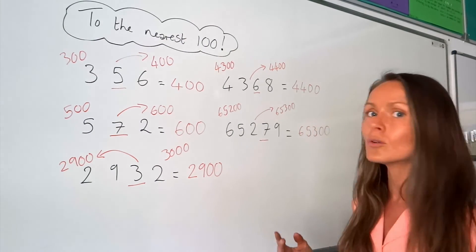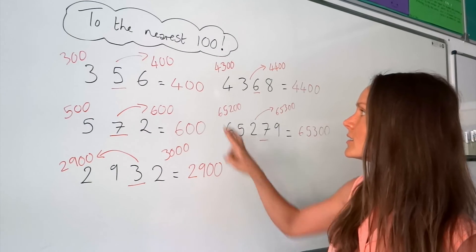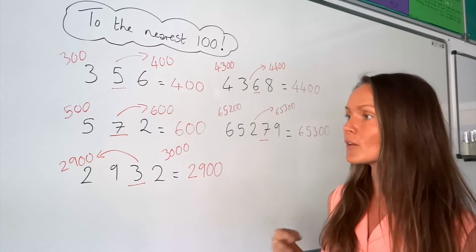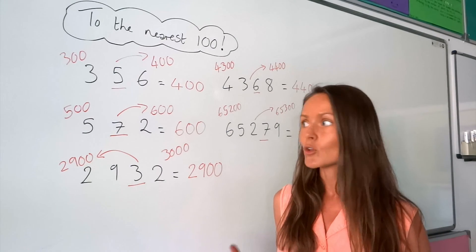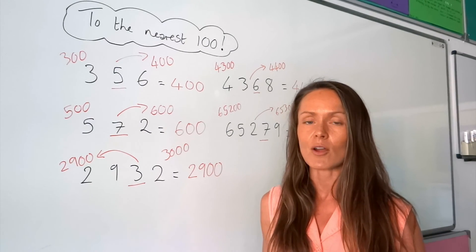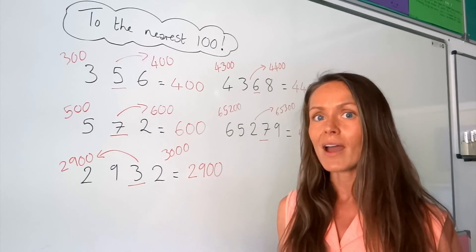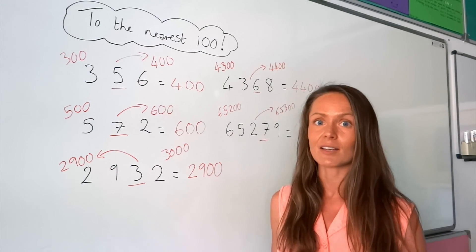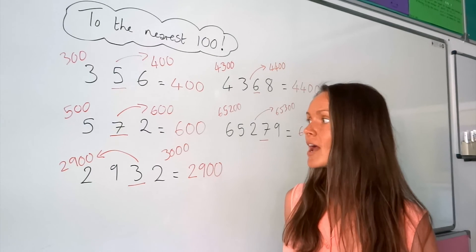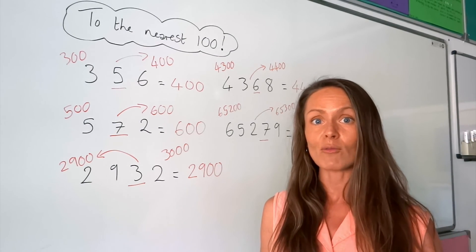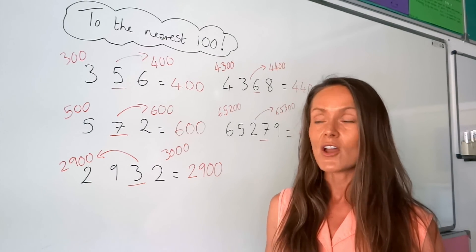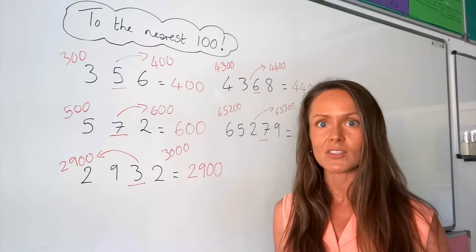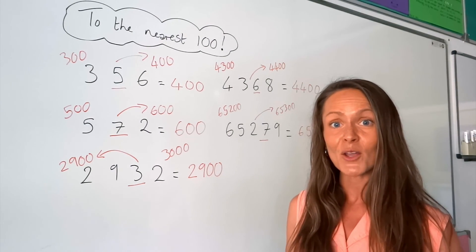Notice that in all of these answers they all end in double zero, just like the number 100. So if your answers don't end in a double zero, you've done them wrong — go back, check them, and try again. I hope you now understand rounding to the nearest 100. I'll soon have a video on rounding to the nearest 1000, so if you're still struggling with rounding you might want to check that one out.